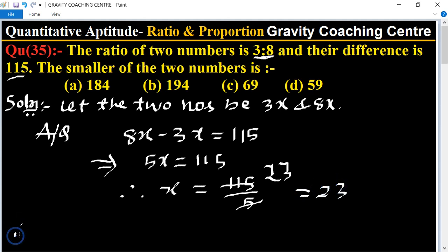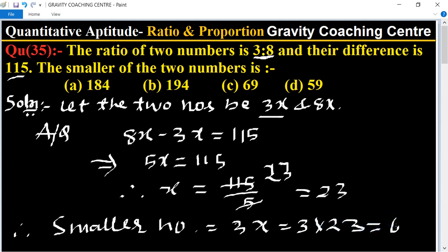Therefore the smaller number equals 3x, so 3x equals 3 into 23 equals 69, which is the required answer. So option C is the right answer.